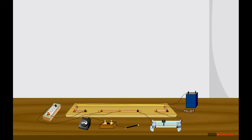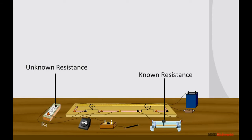The metallic strip has two gaps, G1 and G2. The unknown resistance R4 is connected across gap G1 and a variable known resistance R3 is connected across gap G2.